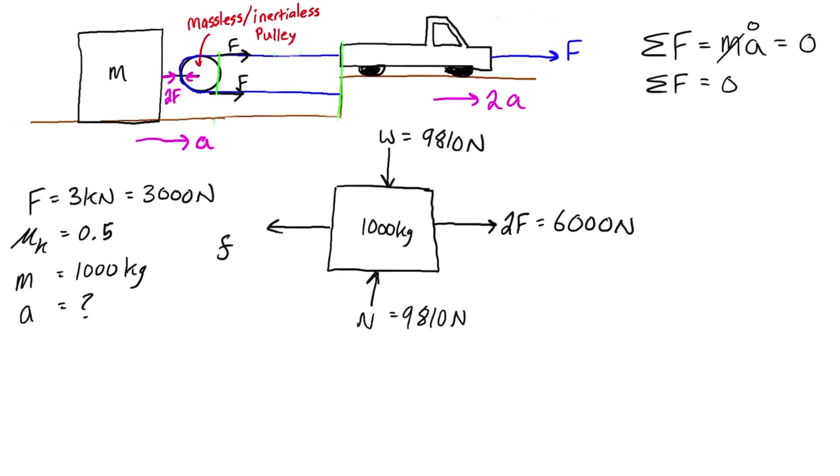If we want to calculate what the friction force is, friction is just equal to mu k N which is just equal to 0.5 times 9810 newtons so friction force is just going to be half that, it's going to be 4905 newtons.